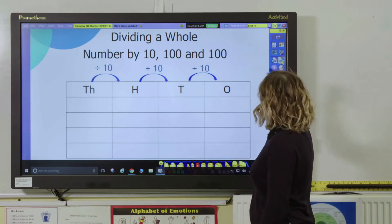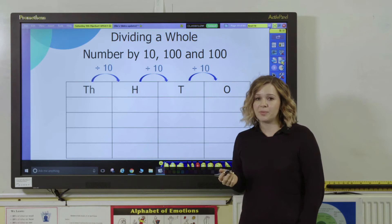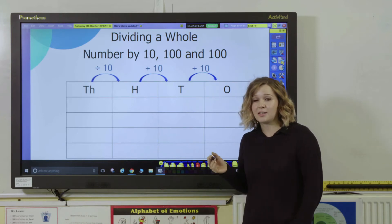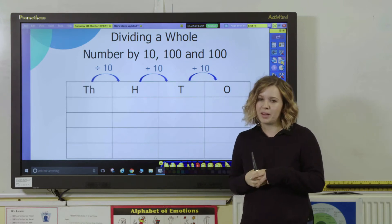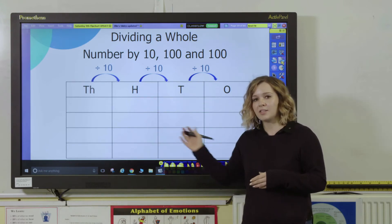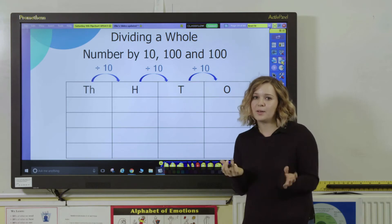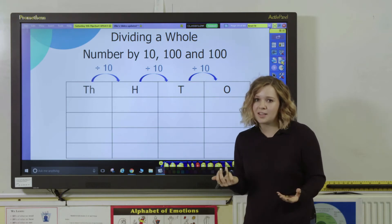Now you want to link that understanding to division. Pupils need to understand that when they're dividing by 10, 100, and 1,000, the inverse is happening. So rather than the digits moving to the right, they're actually going to move to the left. We can start with a nice easy example of this.